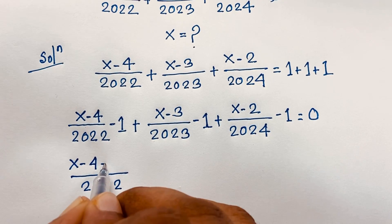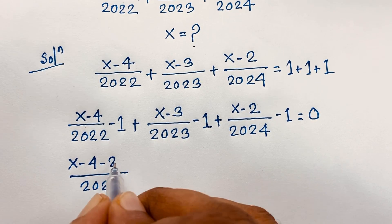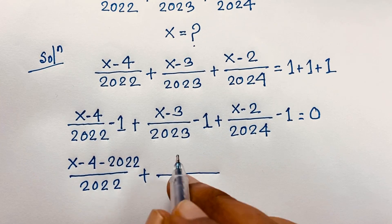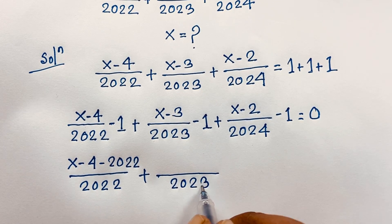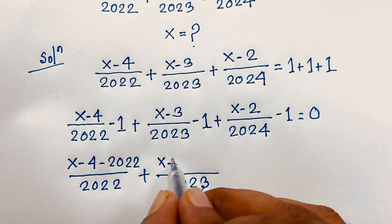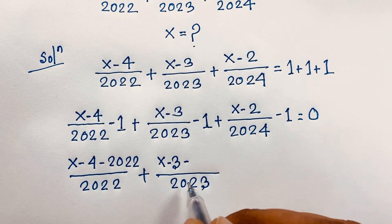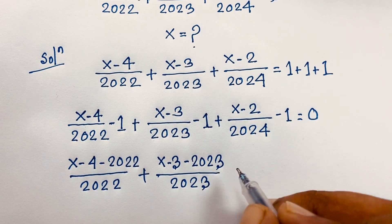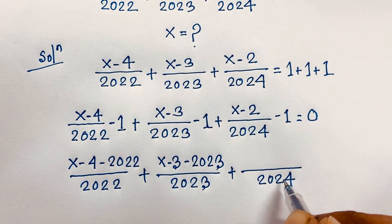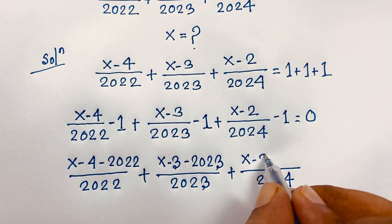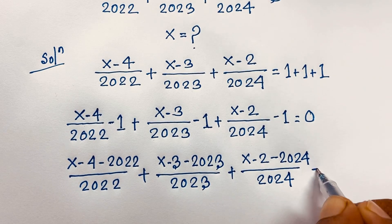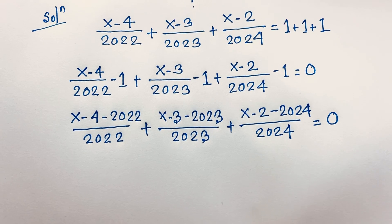Combining each fraction with its minus 1: the first term becomes (x minus 4 minus 2022) over 2022, the second term becomes (x minus 3 minus 2023) over 2023, and the third term becomes (x minus 2 minus 2024) over 2024, all equal to 0.